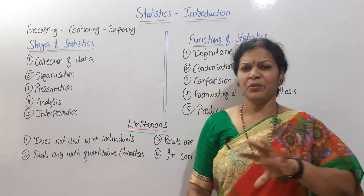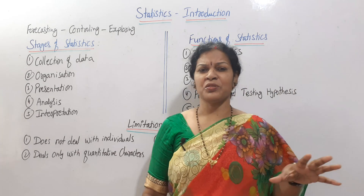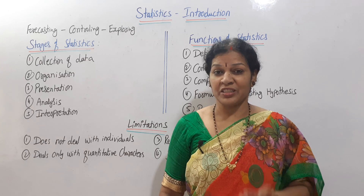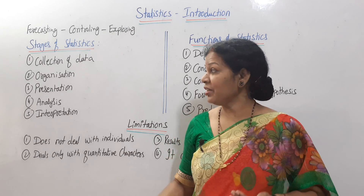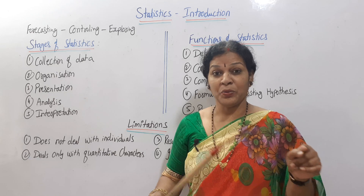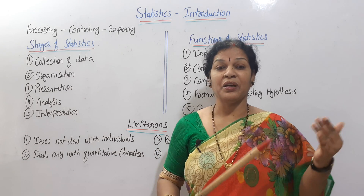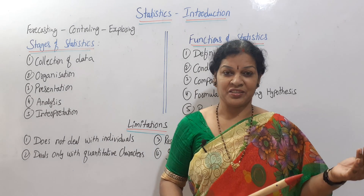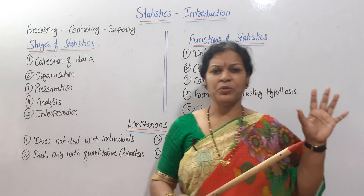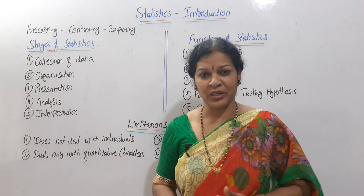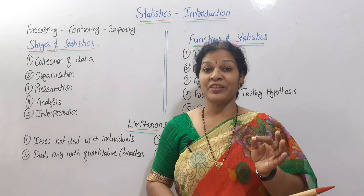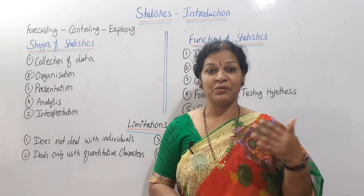Now, what are the stages of statistics — how do we start? There are five stages in total. Step by step, stage-wise, you have to identify each one. The first stage is the collection of data. In statistics, we don't directly work out problems — first of all, we have to collect the data. This is much useful even for research scholars.